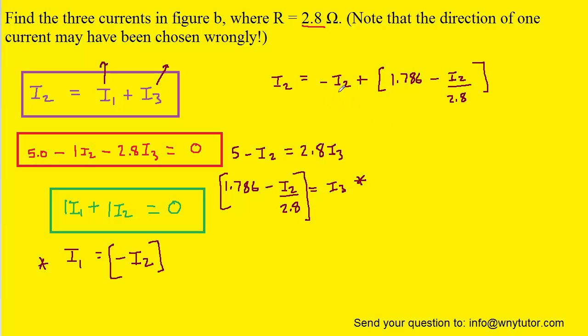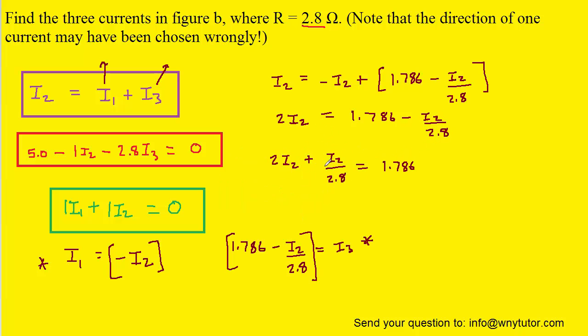To solve for I2, we can add this I2 term over to the left side. We can also add this term, this I2 over 2.8 over to the left side. Now this might look a little confusing, just remember that there's a 1 up here in the numerator, so you can divide that 1 by 2.8. You can then add these like terms together and then divide by the 2.357. And I2 turns out to be approximately .758 amps. So this would be the correct answer for I2.